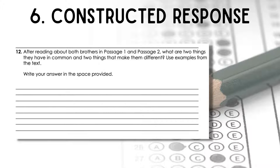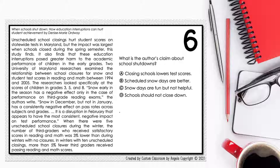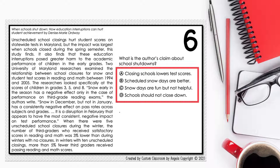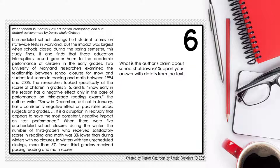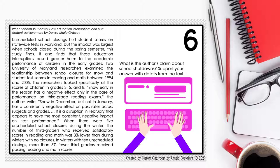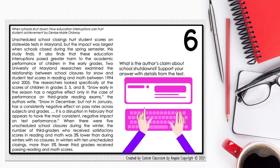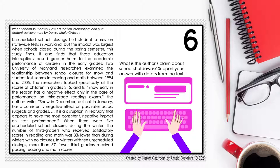The sixth item type is constructed response, where students have to write or type the correct answer. In the past, students would see a multiple choice question with four choices. Now the question will have no answer choices, and students will have to write or type a short paragraph to answer the question using evidence from the text to support their answer.